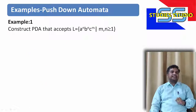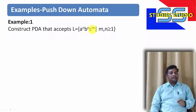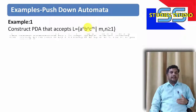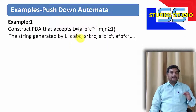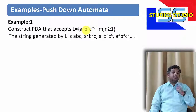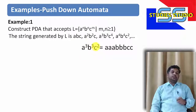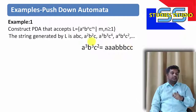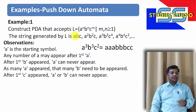Let us take today's first example: construct a PDA that accepts the language a^n b^n c^m, where m and n are greater than or equal to 1. We are going to generate strings of this form: ab c, a²b²c, a³b³c⁴, a⁴b⁴c². The number of a's and number of b's must be the same, whatever the number of c's.